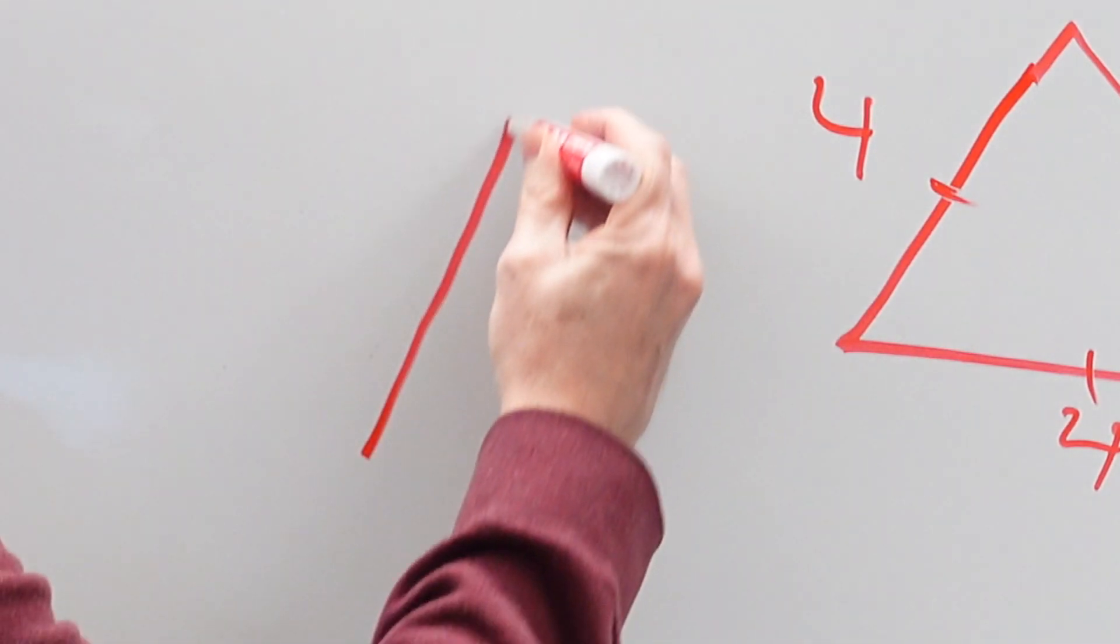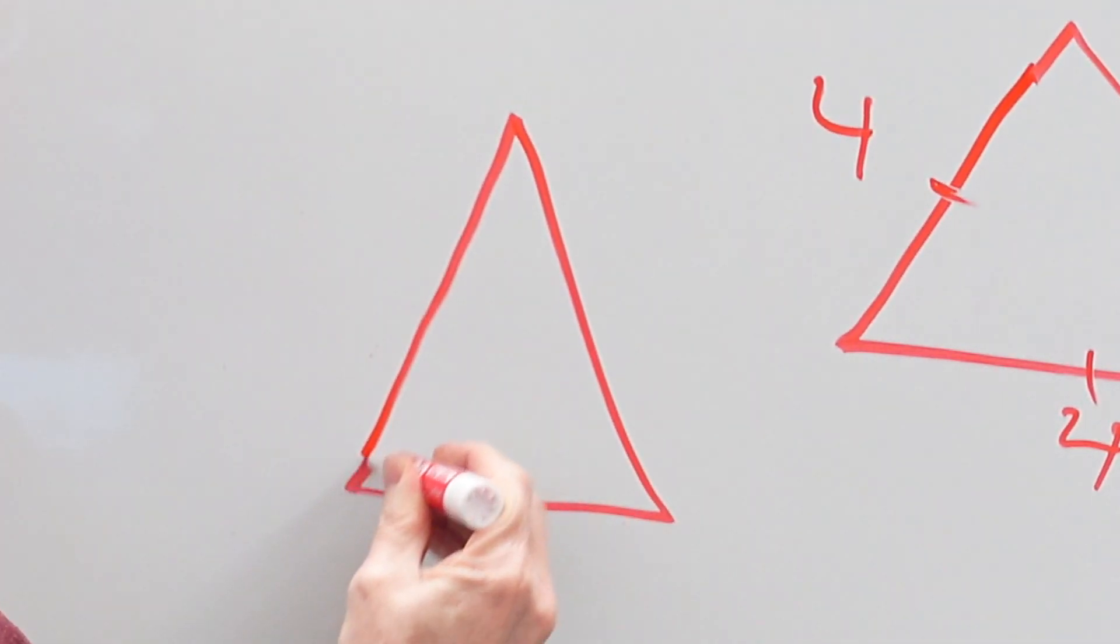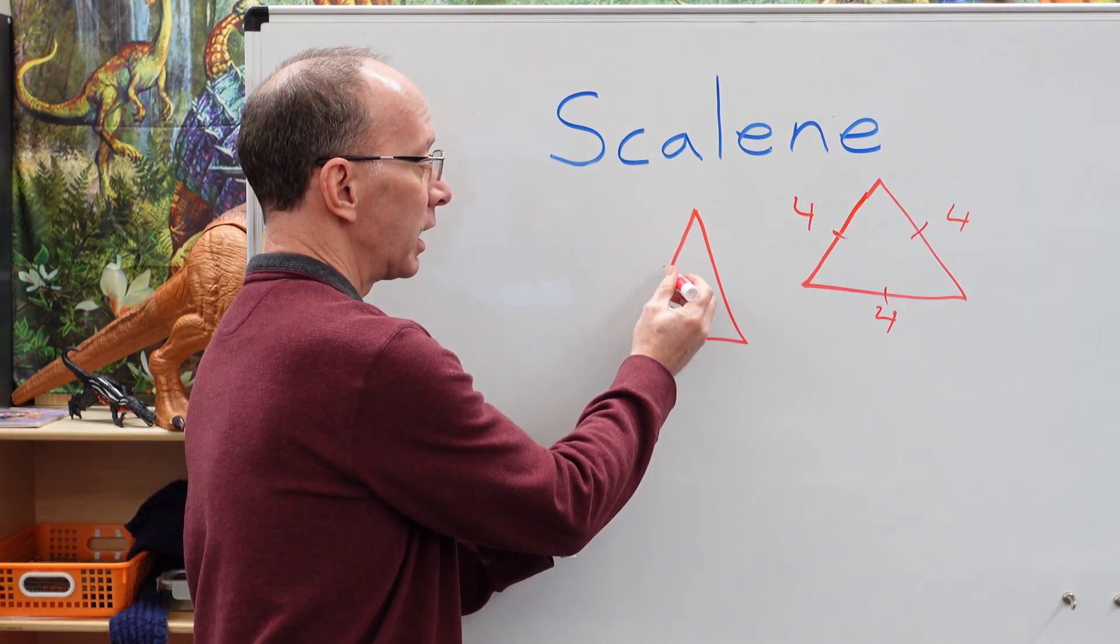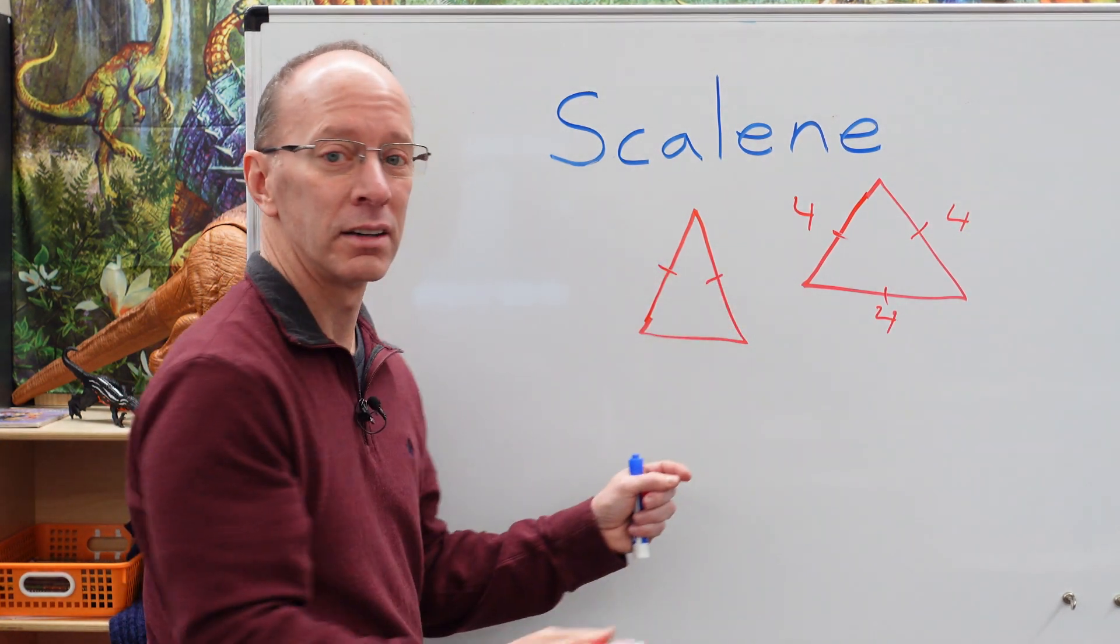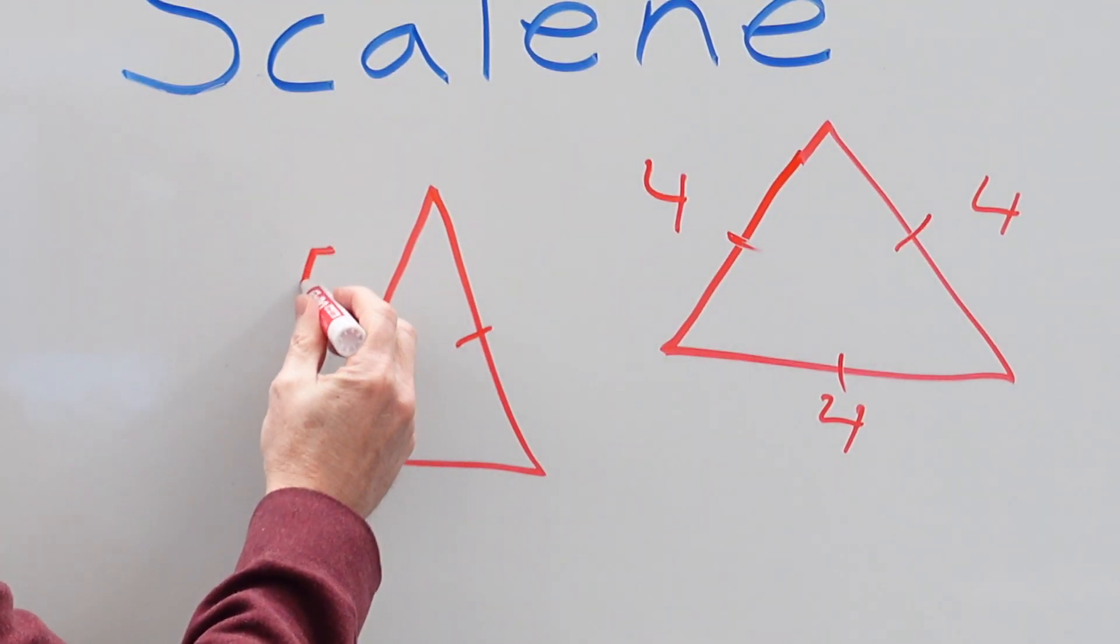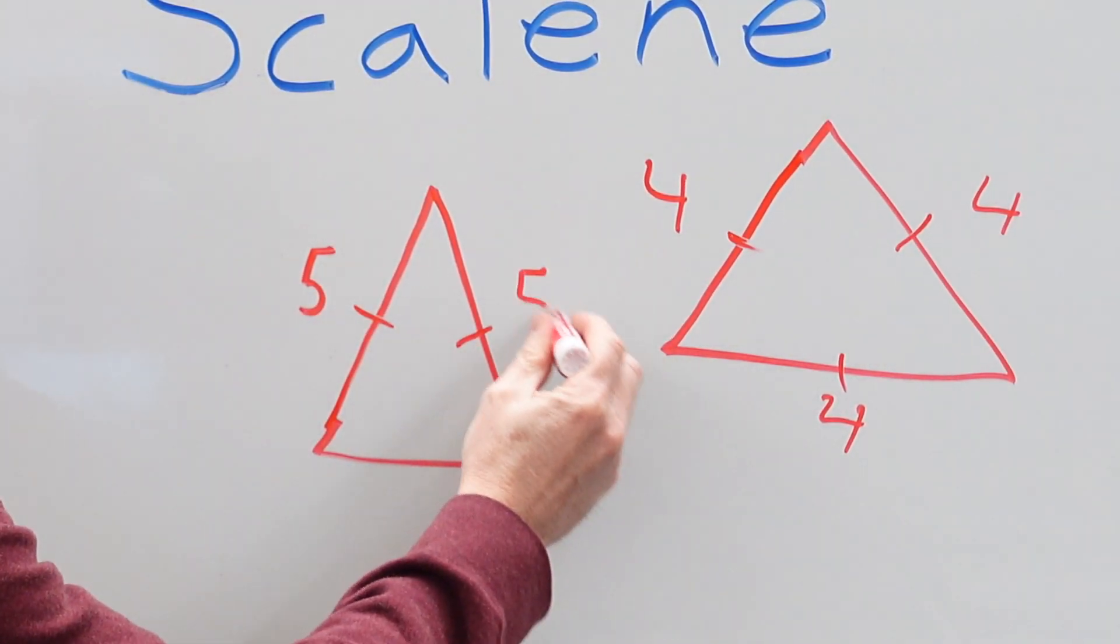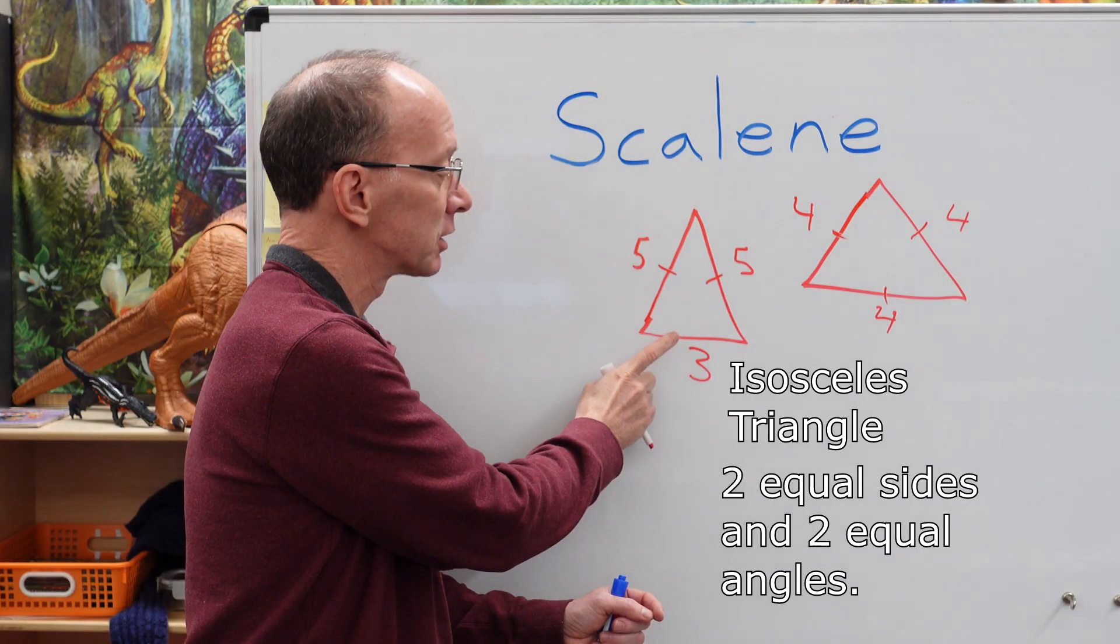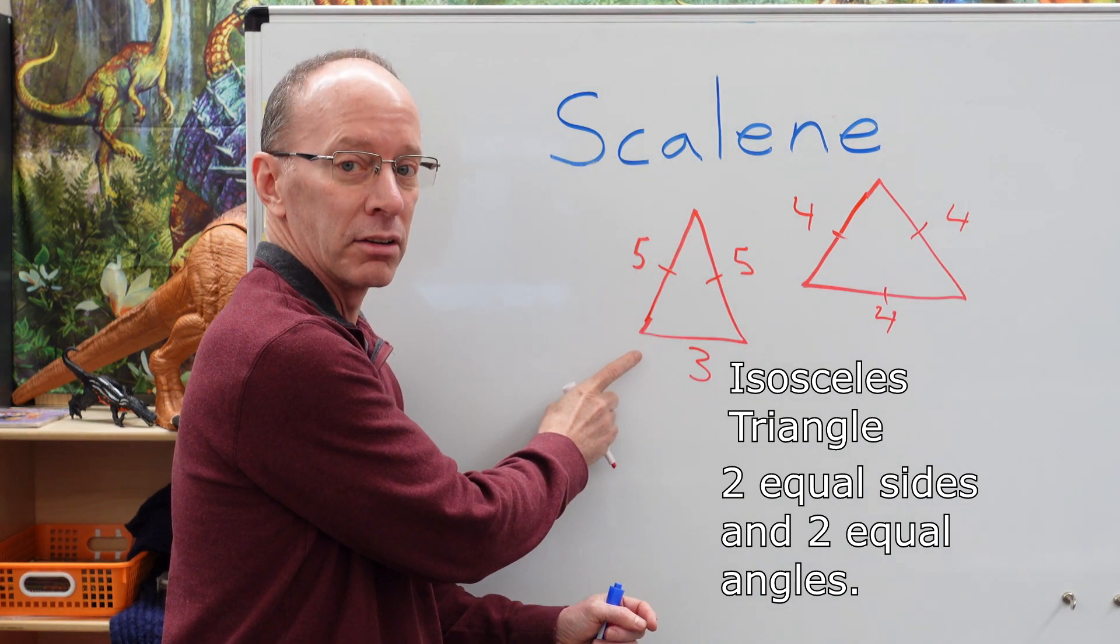So what happens if we have a triangle that looks like this? This triangle you can see is a lot taller. This side here and this side here are the same length. So for instance, this might be five inches, and this will be five inches, and right here, that might be three inches. This type of triangle is called an isosceles triangle.